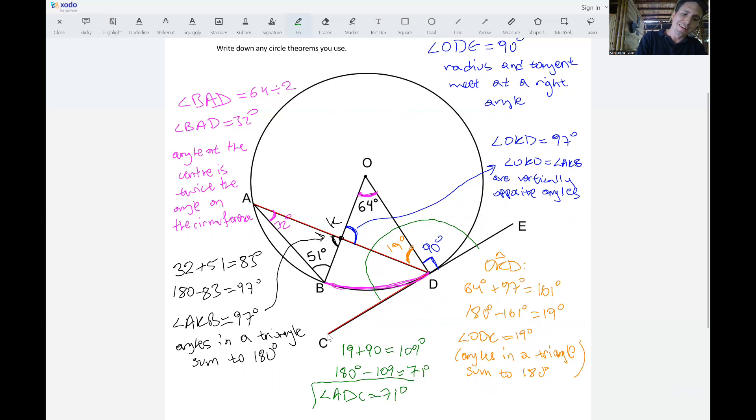So we know that angle ADC must be equal to 71. Let's not get excited and just give the answer right here. We've got one more justification. We need to say that angles on a straight line, almost there, they add up to 180 degrees or we could say sum to 180 degrees.